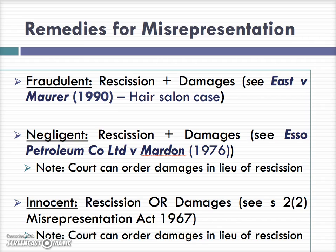In cases of innocent misrepresentation, section 2(2) of the Misrepresentation Act 1967 sets out that the claimant can only claim rescission or damages, not both. Again, the court has the power to order damages in lieu of rescission. Damages are assessed on normal contractual principles.